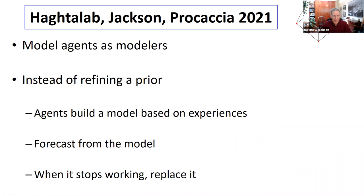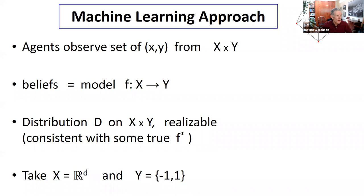I'm going to start with a simple intuition from a recent paper published this year with Nika Hagtotab and Ariel Prakash, where we model agents as modelers. Instead of being Bayesians refining a prior, agents build a model based on past experiences, forecast from that model, and replace it when it stops working. Think of people observing some set of past experiences—they have situation variables x and are trying to make predictions about y variables, where beliefs are a model mapping x's to y's.